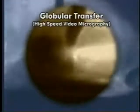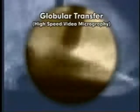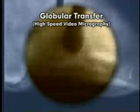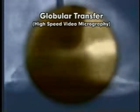The globular transfer mode is characterized by drop sizes with a diameter larger than that of the electrode. These molten drops are easily acted on by gravity, usually limiting successful transfer to the flat position.